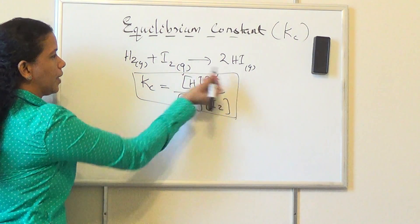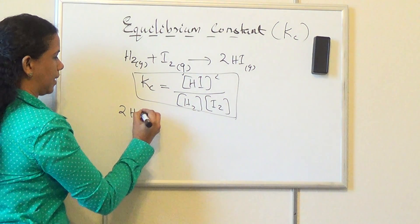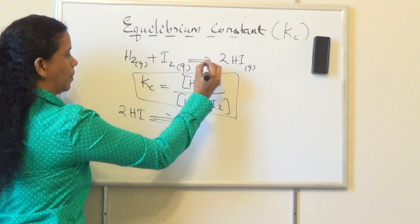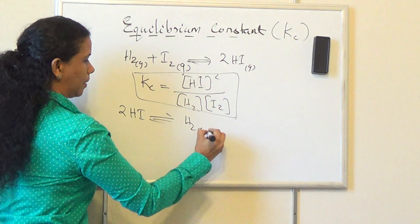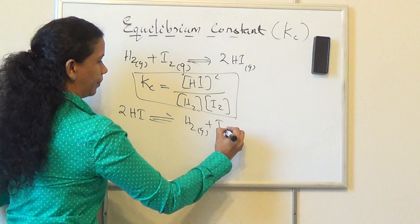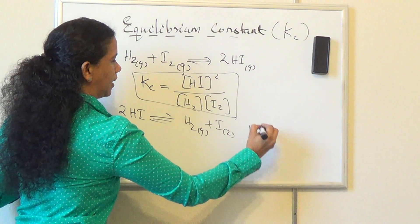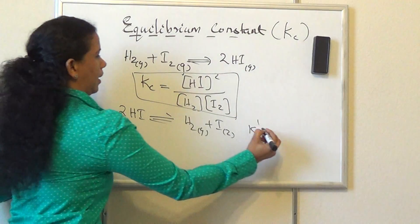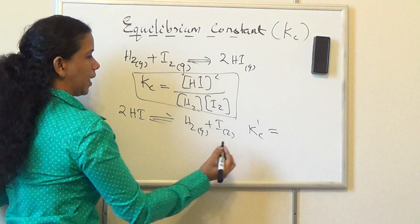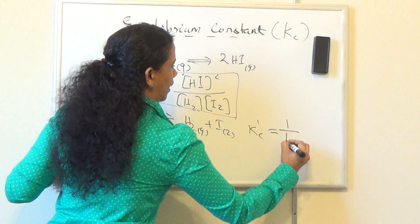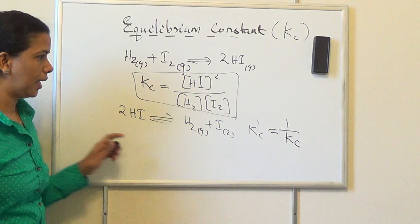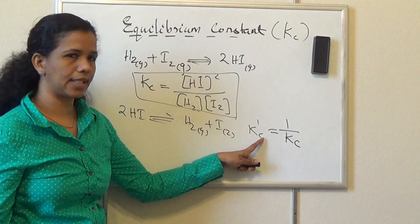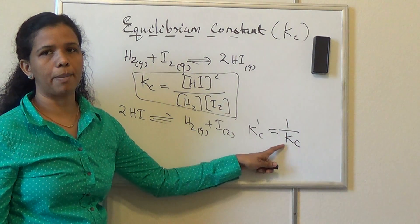When we reverse this reaction — 2HI gives H2 gas plus I2 — the equilibrium constant becomes the inverse. The reverse reaction equilibrium constant K'c is equal to 1/Kc.